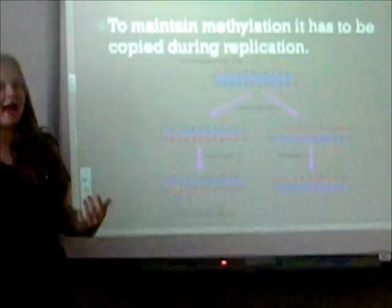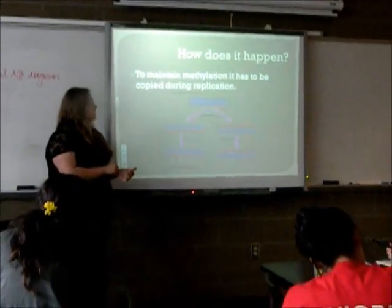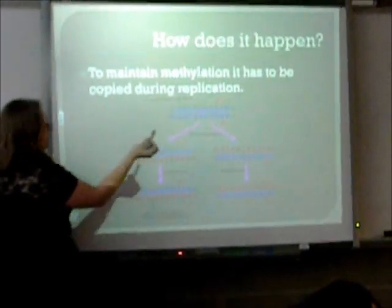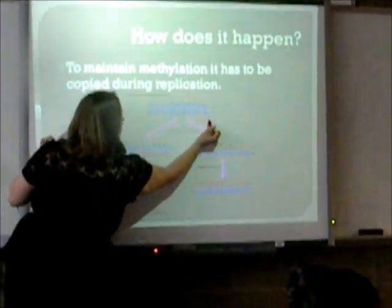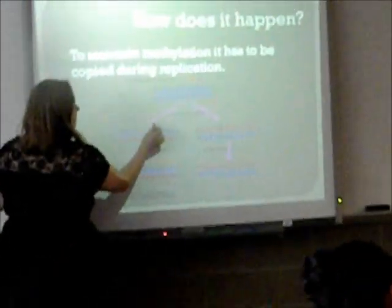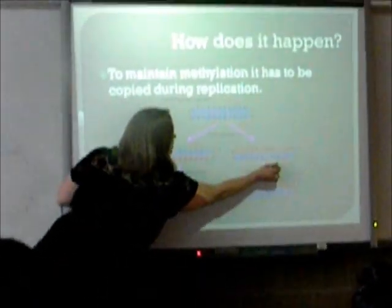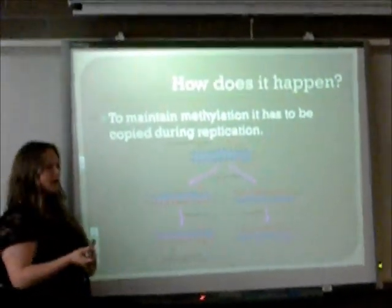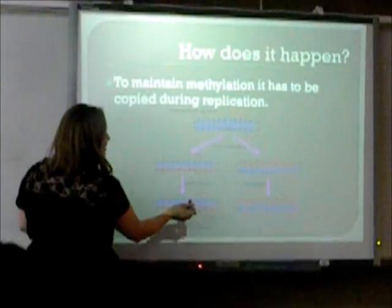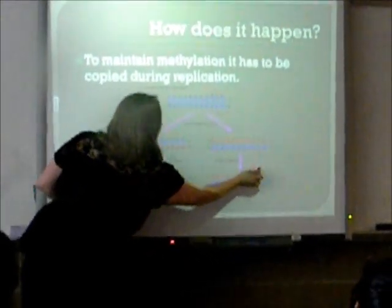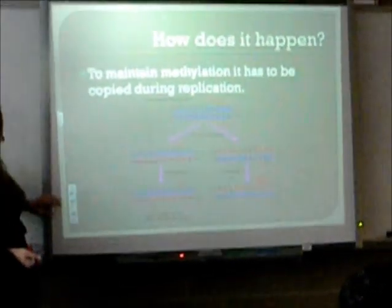To maintain methylation, it has to be copied during replication. It would take a gene that is methylated, it would split, and the methylation would split as well — so there would only be one methylated CpG site on each of the strands. Then a maintenance DNMT would come in and add the methylation to the new strands. That's how methylation is copied.